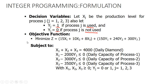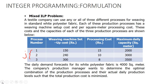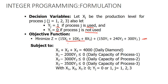For the objective function, we minimize: 15x₁ + 10x₂ + 8x₃ + (150y₁ + 240y₂ + 300y₃). The values 15, 10, and 8 come from the processing costs in the table, while 150, 240, and 300 are the weaving machine setup costs.